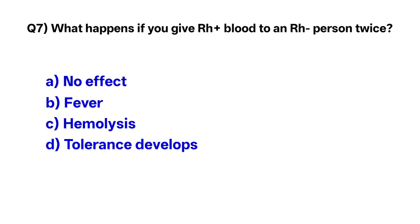Question number seven: What happens if you give RH positive blood to an RH negative person? The correct option is C, hemolysis.